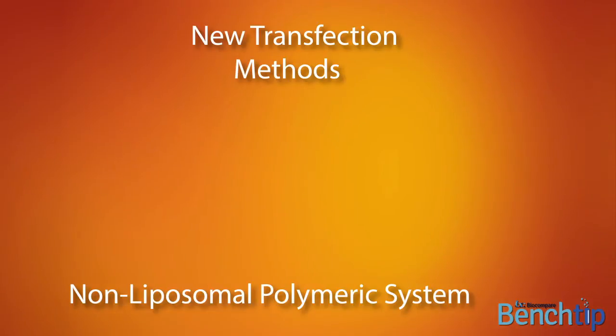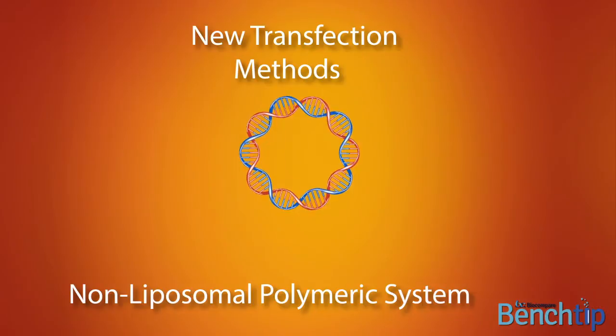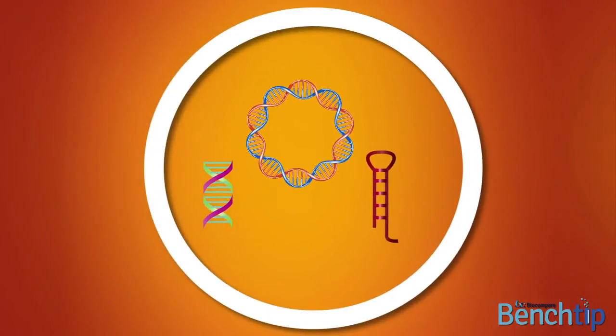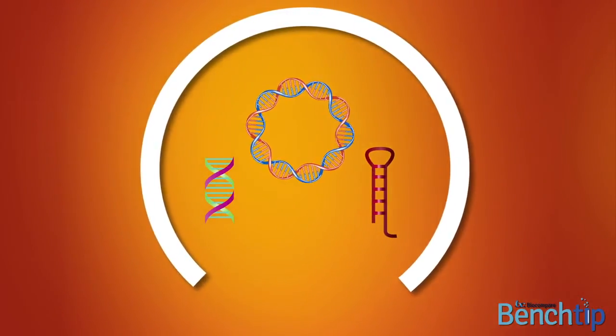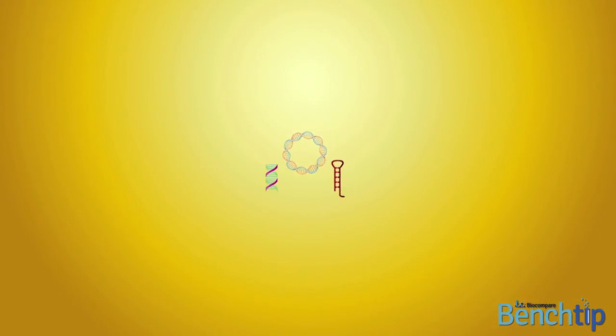These novel polymeric systems can efficiently deliver both DNA and smaller nucleic acids such as siRNA and microRNA, out of the endosome and into the cytoplasm, overcoming a critical barrier to nucleic acid delivery.